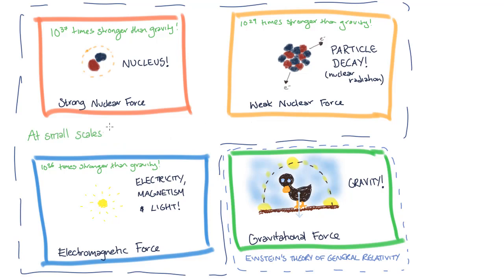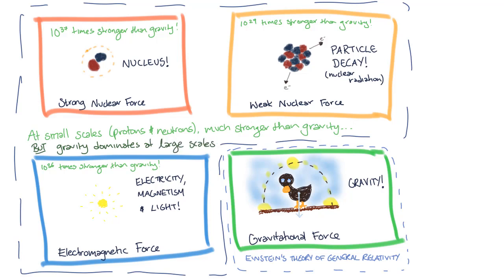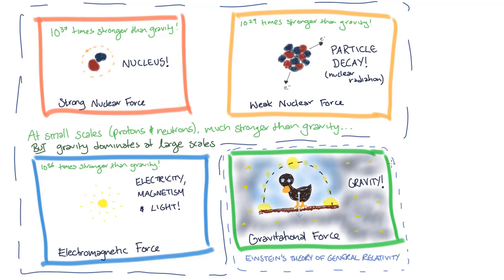This also leads us to another question. If gravity is so much weaker than the other forces, why does it seem to dominate at large scales? After all, we don't see one planet flying towards another because of the strong nuclear force, and we don't see the charge of Jupiter affecting the orbit of the moons. As it turns out, the strong nuclear force and the weak nuclear force are both short-ranged forces.